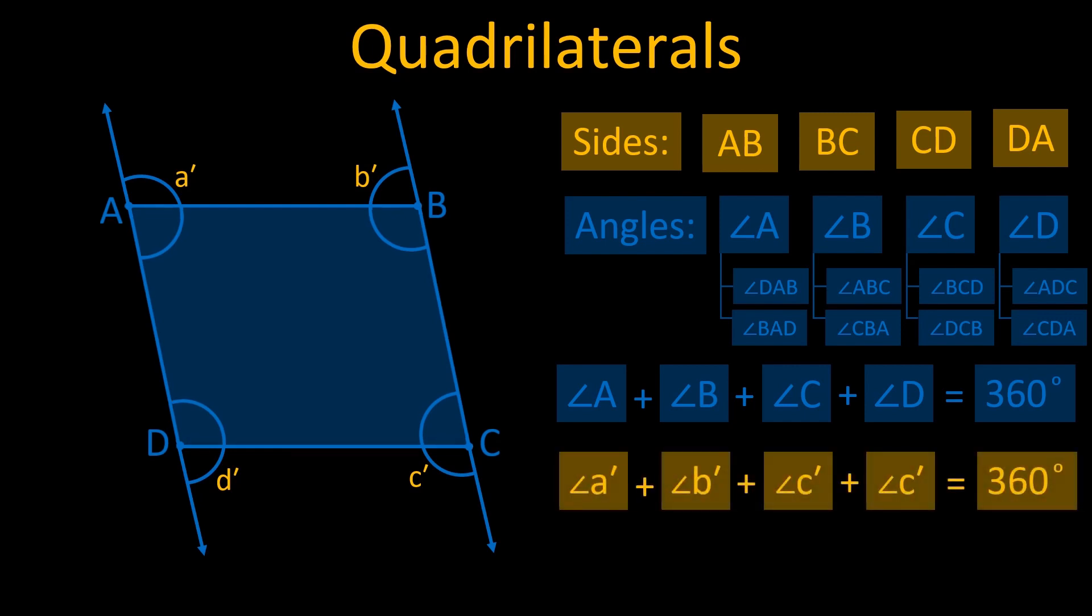The lines joining the opposite vertices of a quadrilateral are called the diagonals of the quadrilateral. AC and BD are the diagonals of quadrilateral ABCD. Every quadrilateral has two diagonals.